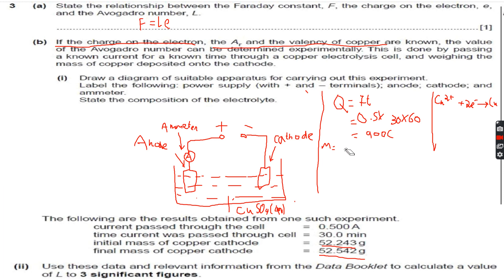When we calculate this, we get 0.299 grams. 0.299 grams of copper has been deposited. So this is the mass of copper deposited.